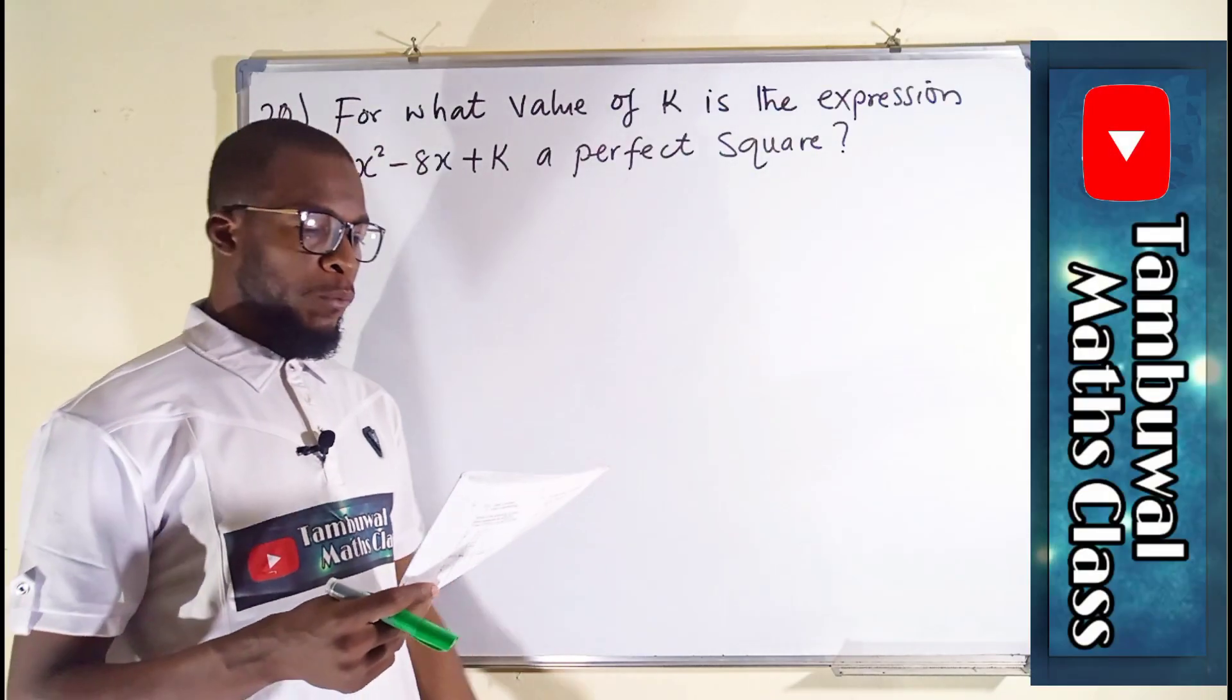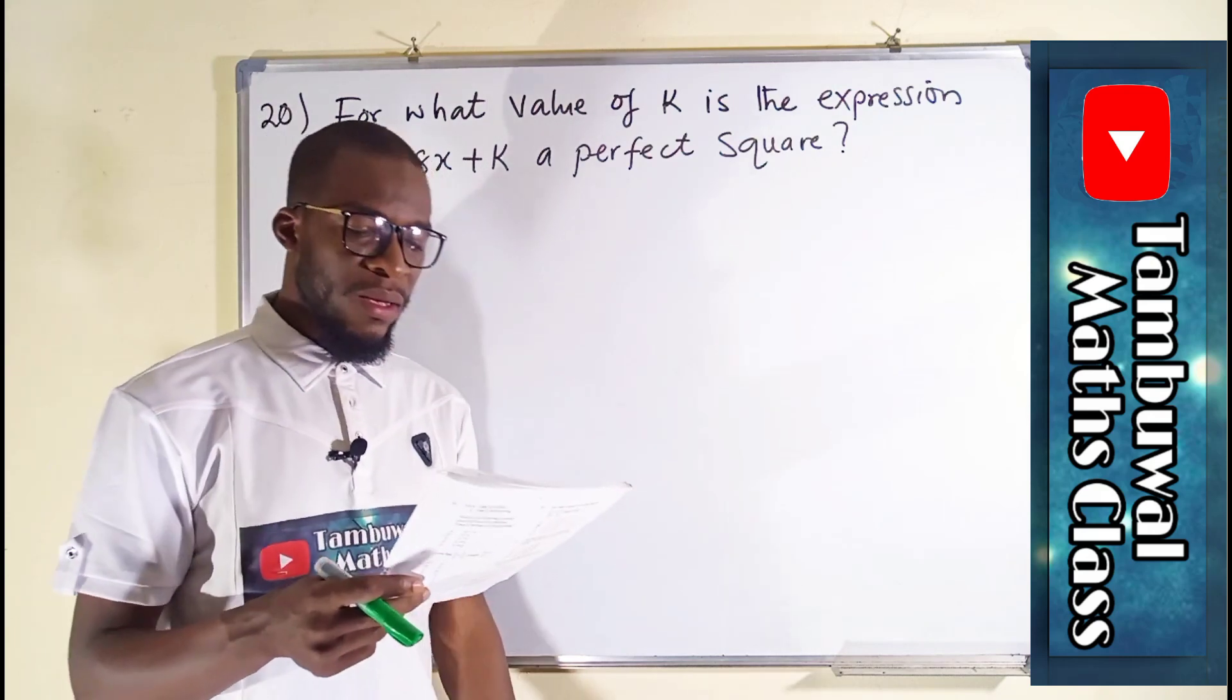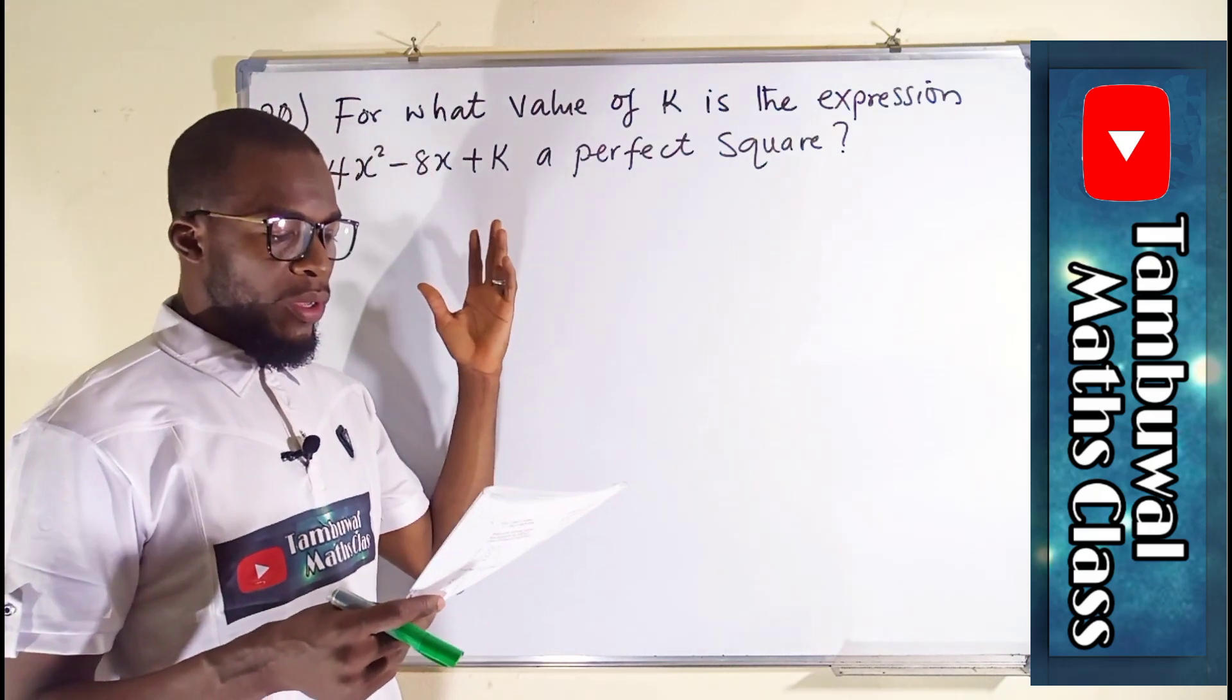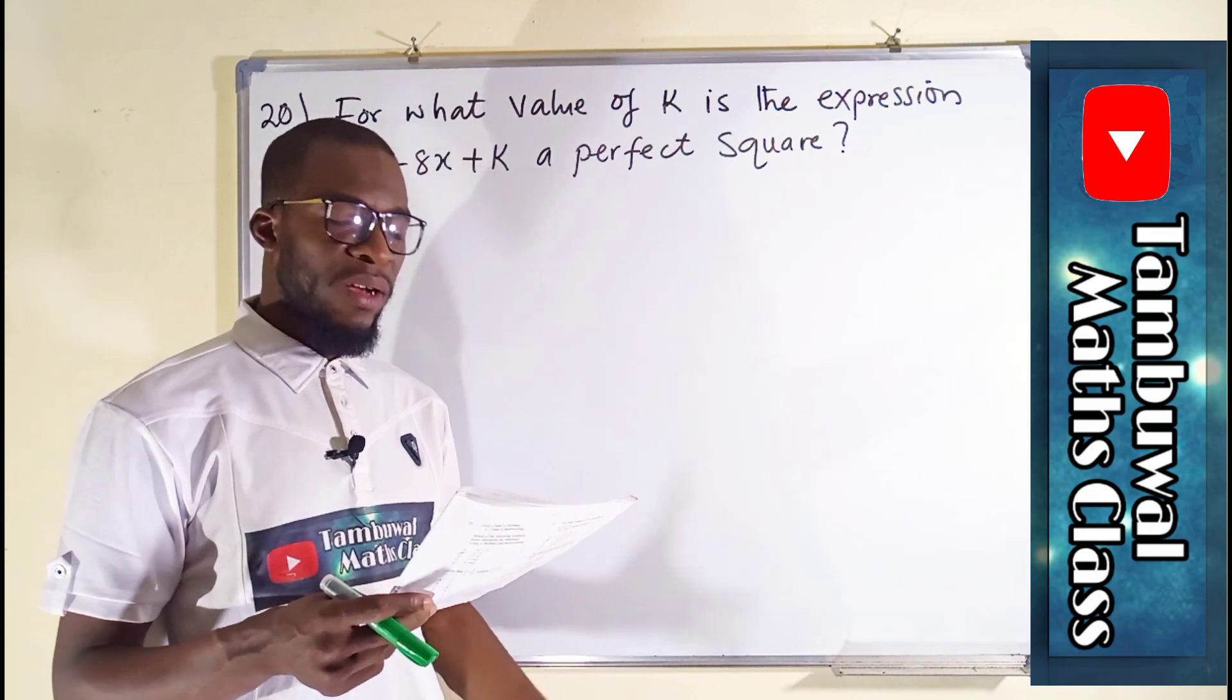Question number 20. It says, for which value of k is the expression 4x squared minus 8x plus k a perfect square?